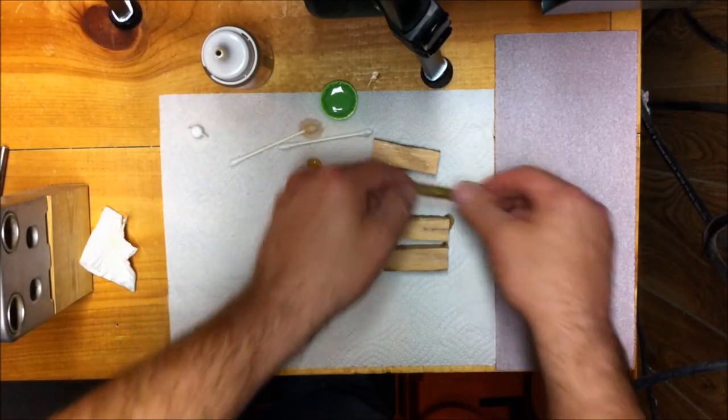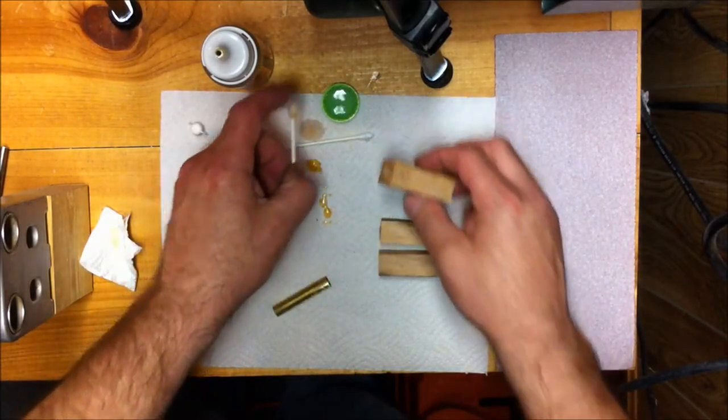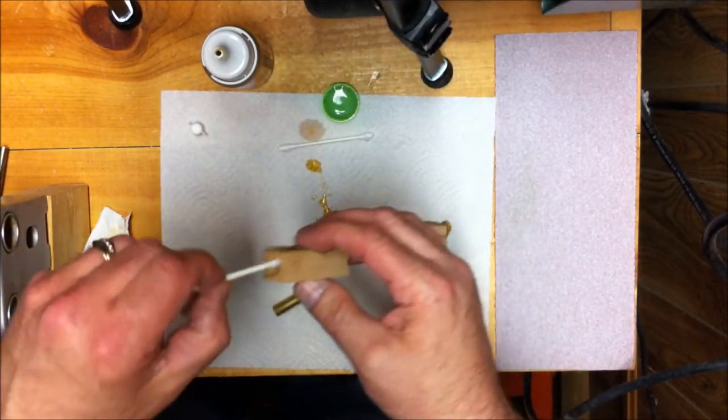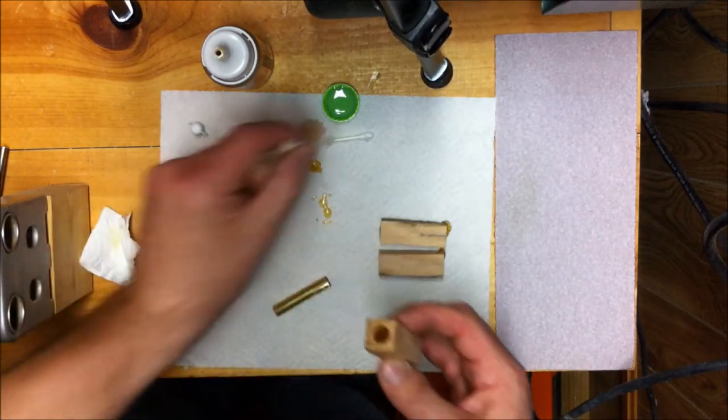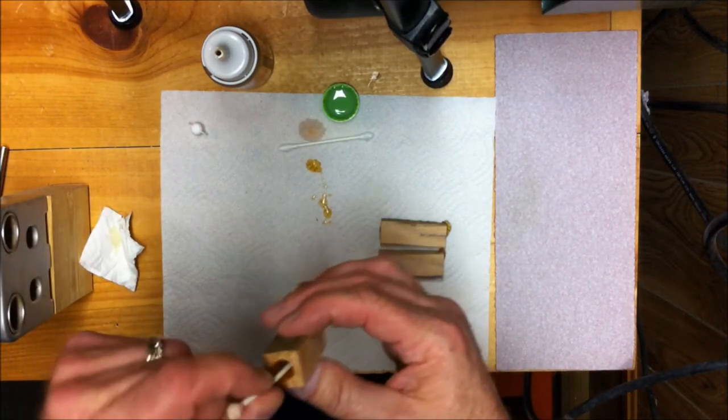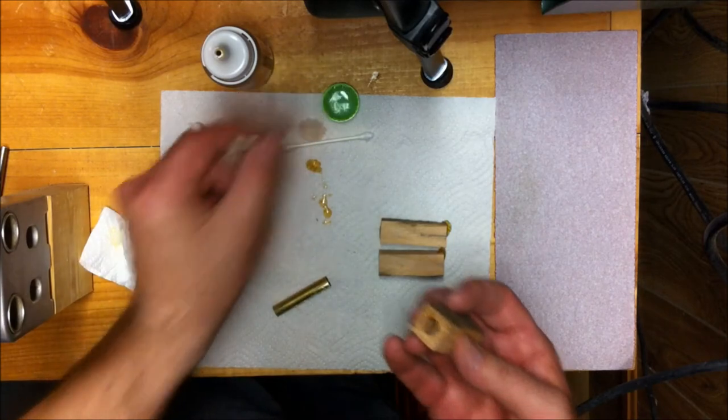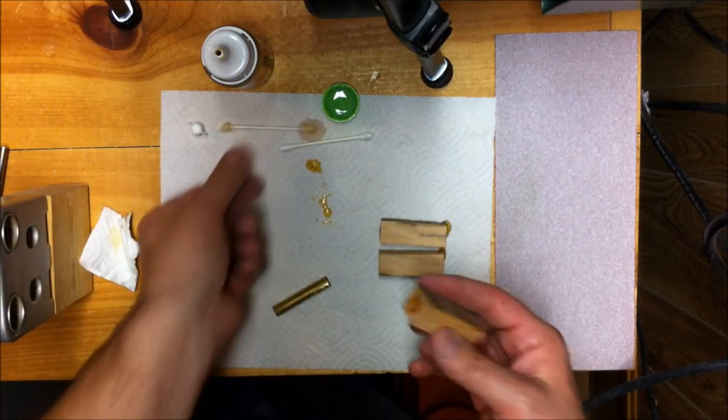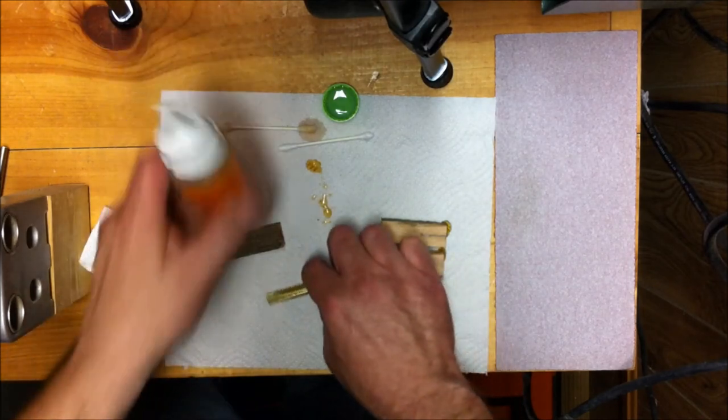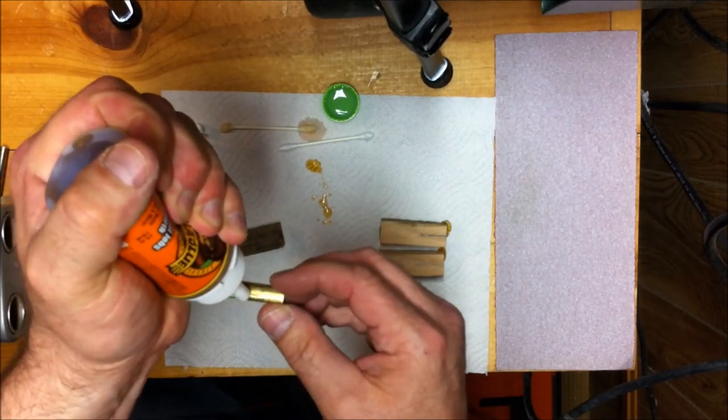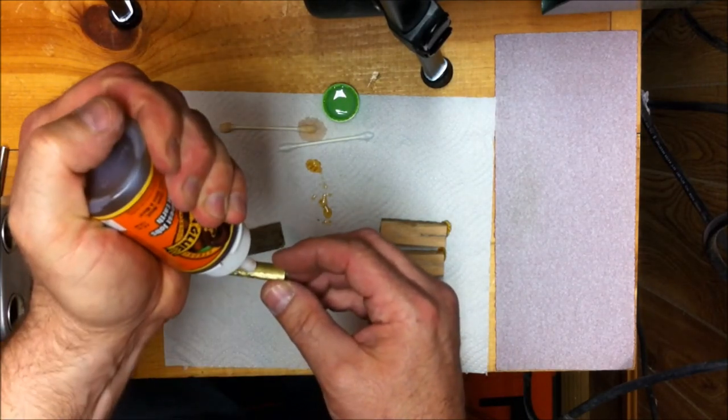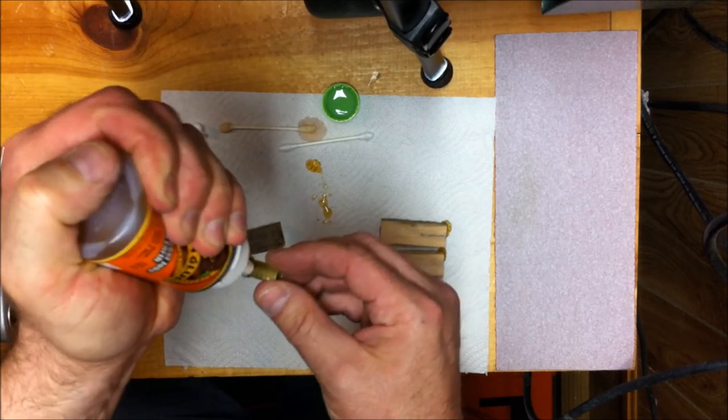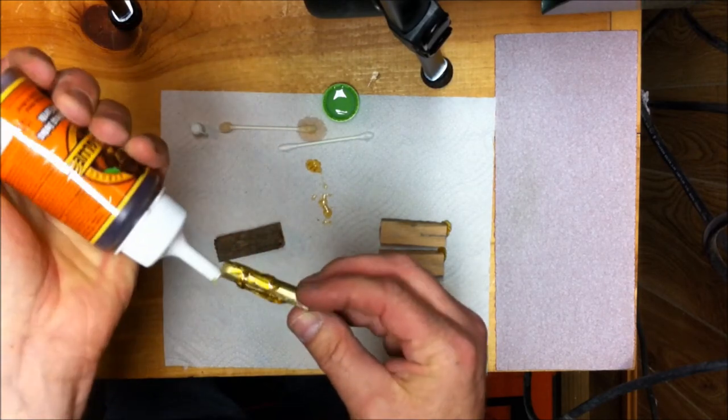And let's get the last blank going here. Let's remember this time that we first want to swab the inside of the blank. You don't have to get it sopping wet, you just need it damp. It doesn't take a lot of water to activate the glue.